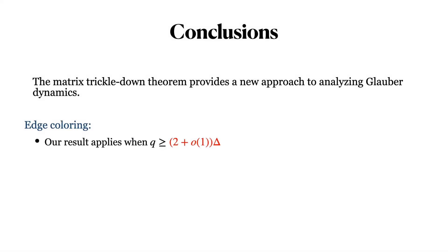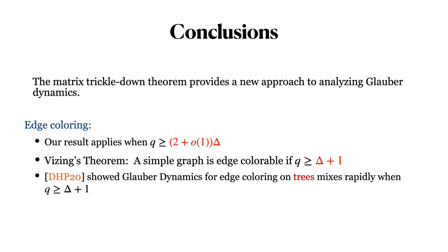The matrix trickle-down theorem provides us a new approach to analyzing Glauber dynamics, allowing us to reduce the number of colors needed for edge coloring to (2 + o(1))Δ. However, Vizing's theorem ensures that a simple graph is edge colorable if q is at least Δ + 1, and DHP20 showed the rapid mixing of Glauber dynamics on trees when q is at least Δ + 1.